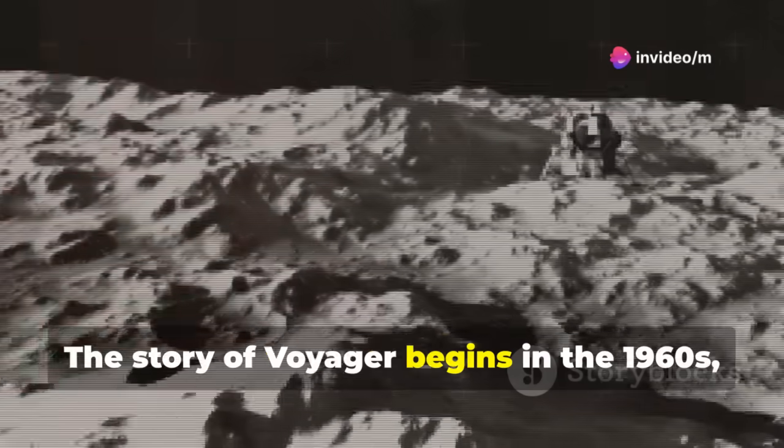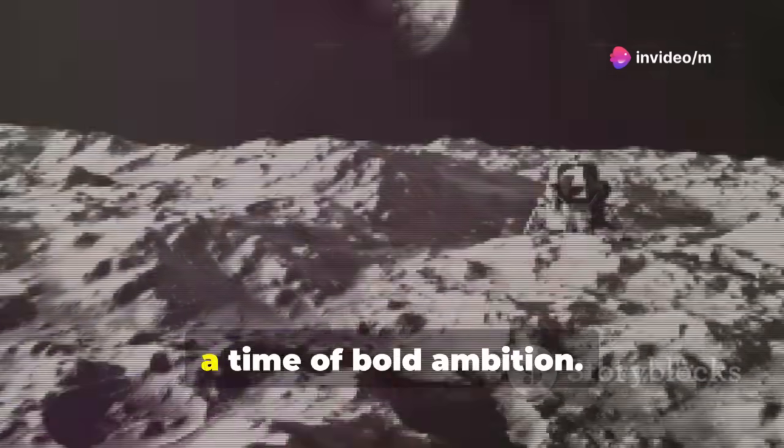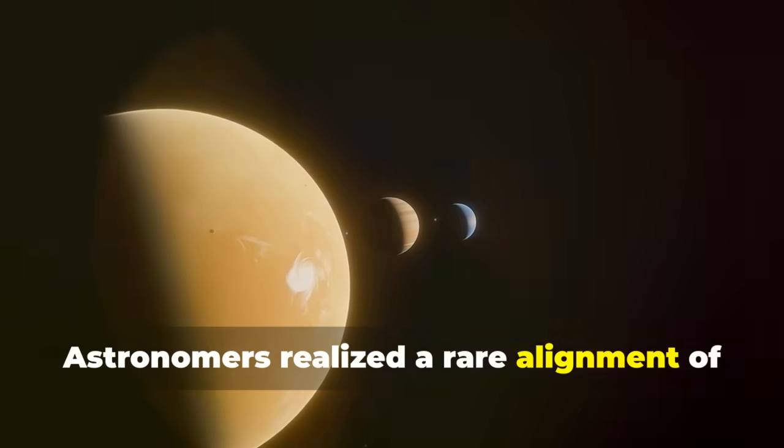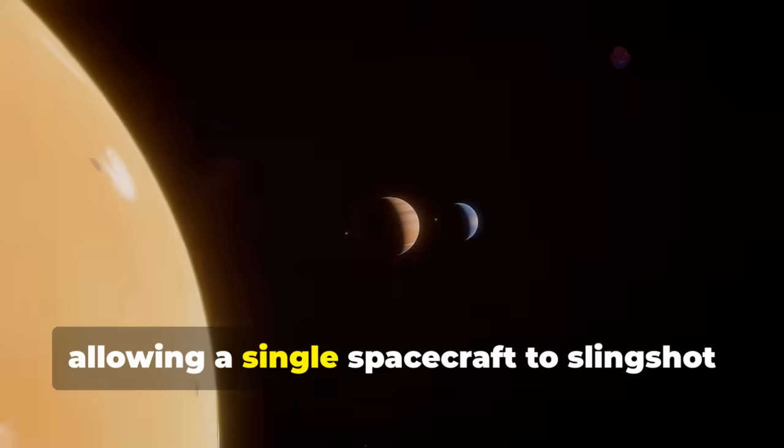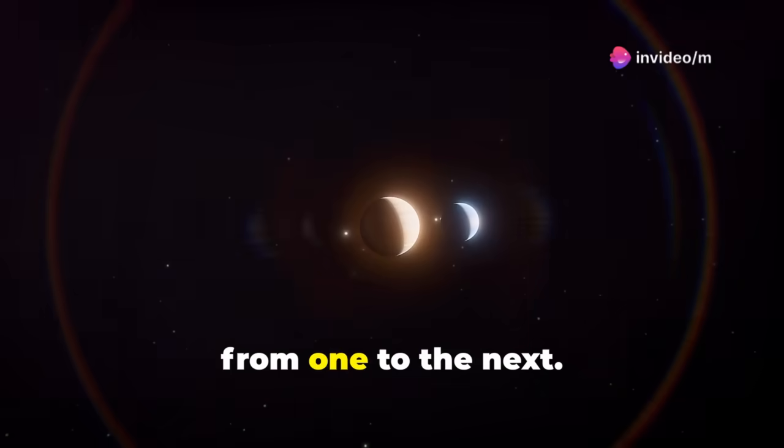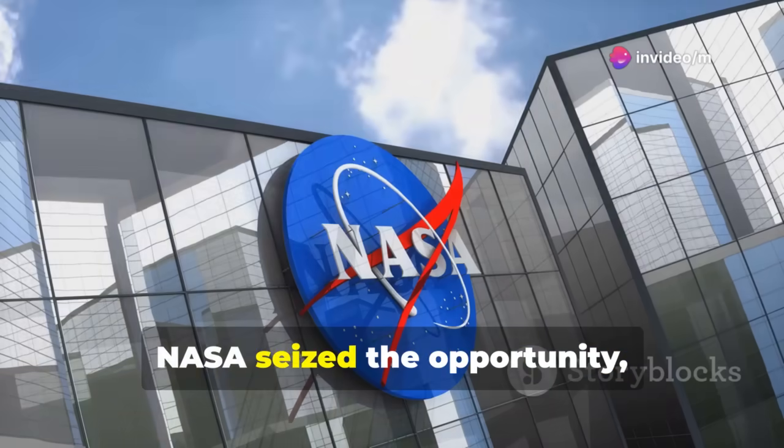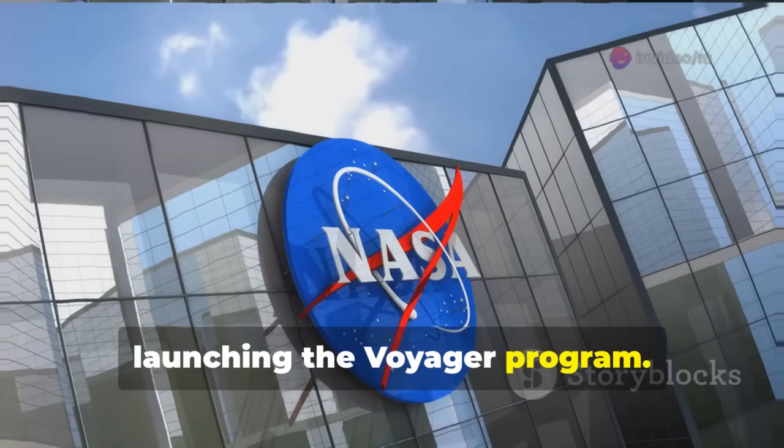The story of Voyager begins in the 1960s, a time of bold ambition. Astronomers realized a rare alignment of the outer planets would occur in the late 1970s, allowing a single spacecraft to slingshot from one to the next. NASA seized the opportunity, launching the Voyager program.